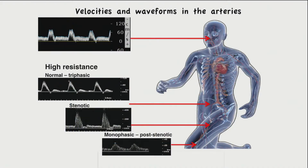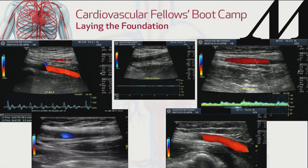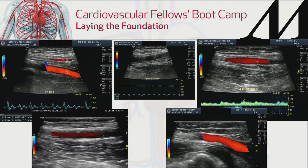It's your job to go back and figure out where this obstruction is. Most likely, if you find that obstruction, the stenosis will show up with increased velocity. But the post-stenotic, blunted waveform — when the systolic upstroke is delayed — that's an indirect sign. So that's your indirect sign for obstruction.